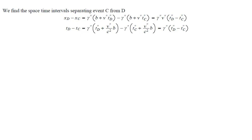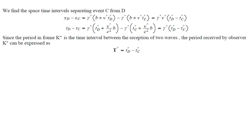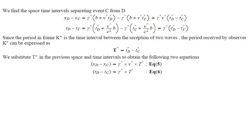We find the spacetime intervals separating event C from D. Since the period in frame K'' is the time interval between the reception of two waves, the period received by observer K'' can be expressed as T'' equals T''D minus T''C.